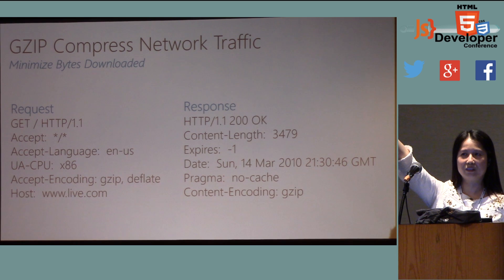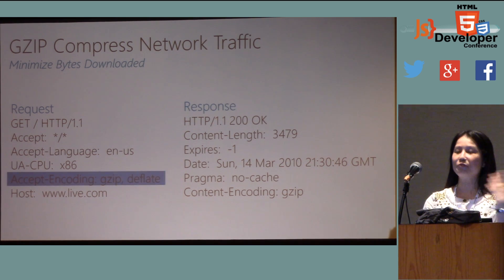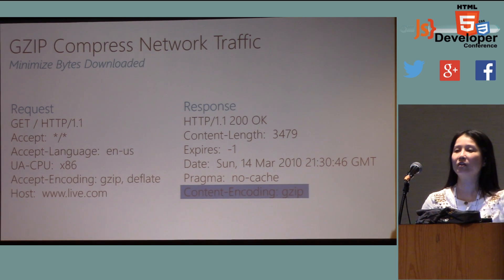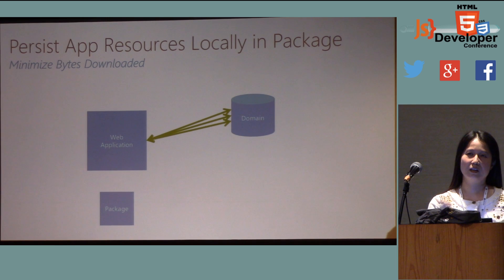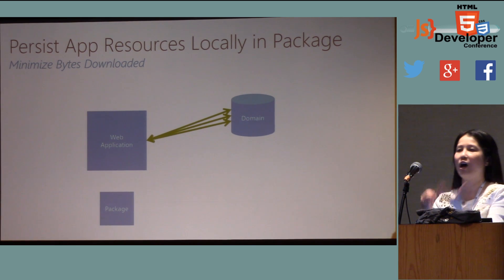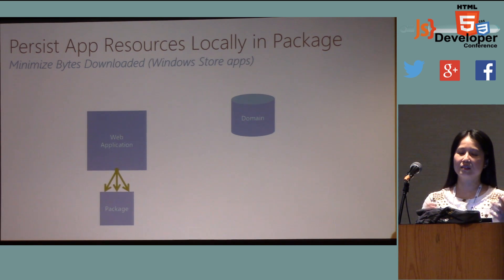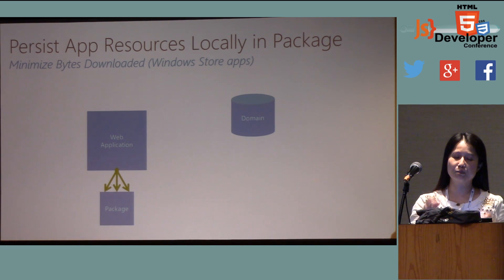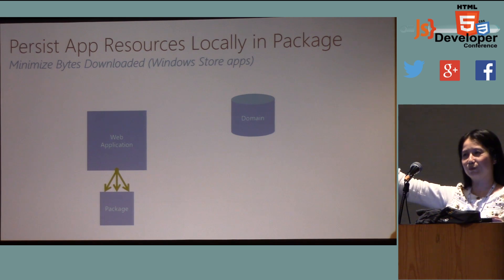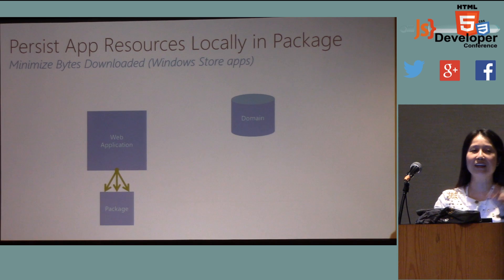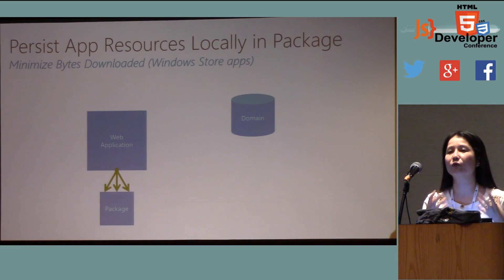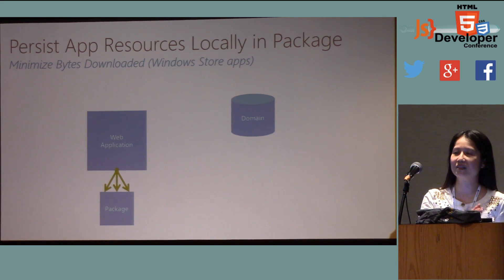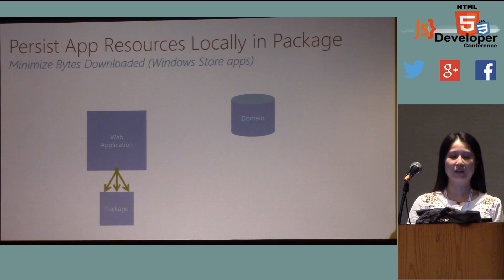One important thing: use gzip. By default you have gzip — just make sure you use it and don't turn it off. It really compresses your network traffic. For static resources — images, sounds, videos, media — especially when developing modern apps, you probably want to package them locally rather than getting them from the server every time. For iOS, Android, or Windows apps, package all your web content and media together at startup for the best performance. If you have modern apps, you should definitely do a local package.